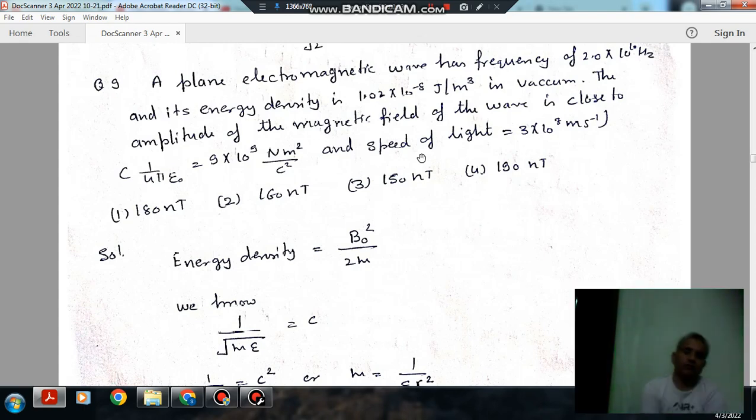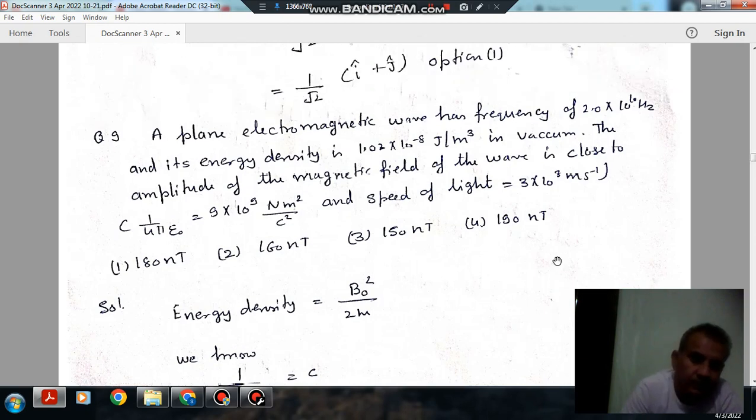Hello welcome again, we are covering IIT JEE physics. The topic is electromagnetic wave. Question number 9: A plane electromagnetic wave has a frequency of 2 into 10 hertz and its energy density is 1.02 into 10 to the minus 8 joules per meter cube in vacuum. Find the amplitude of the electromagnetic wave.